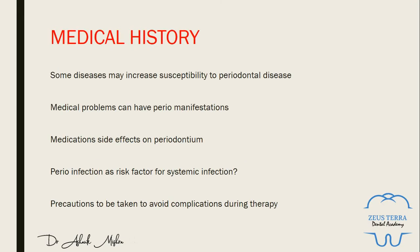Medical history is critically important. Many aspects of a patient's medical history are particularly relevant for periodontal care. Some diseases may increase susceptibility to periodontal disease — for example, diabetes or HIV. These conditions can definitely make the disease worse. There are also medical problems that may have periodontal manifestations, such as mucocutaneous disorders or leukemia, which may initially present periodontally.